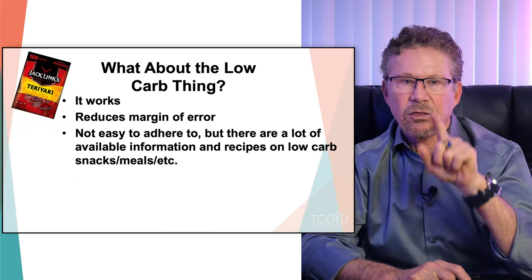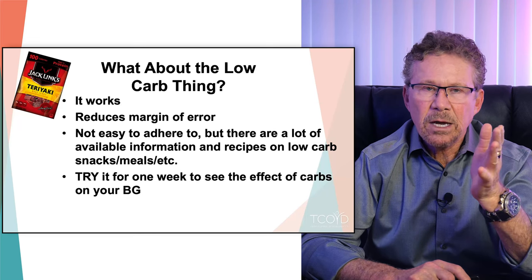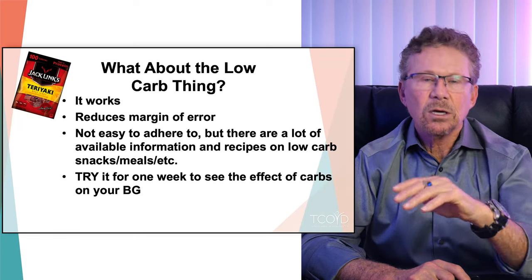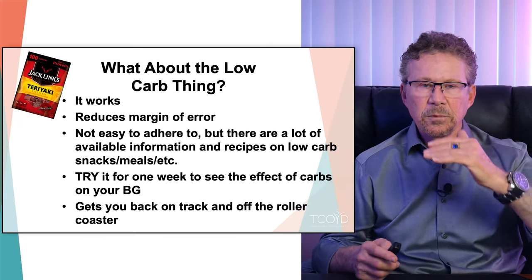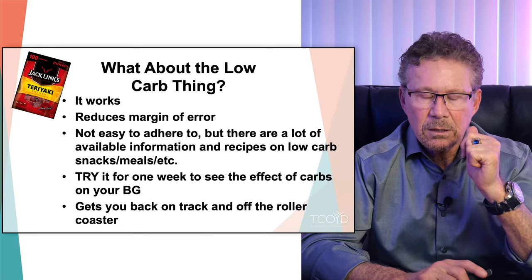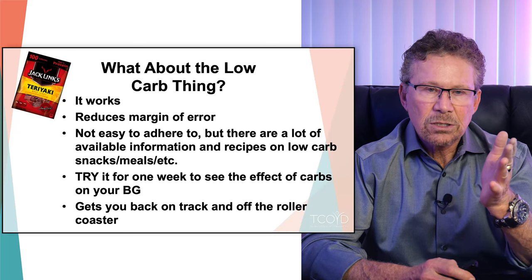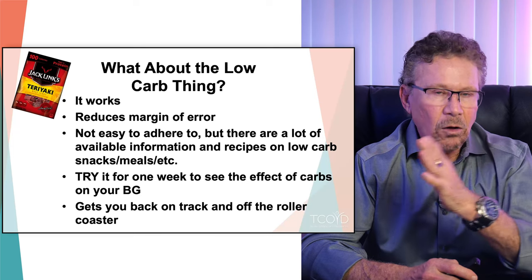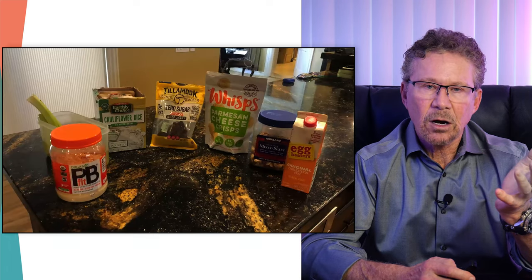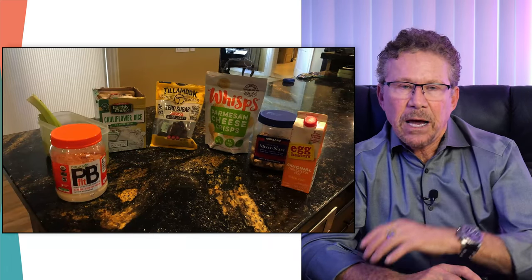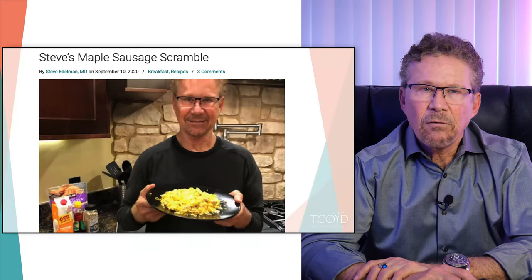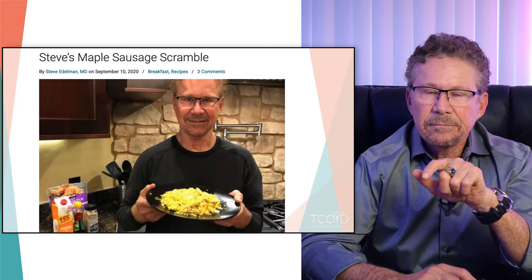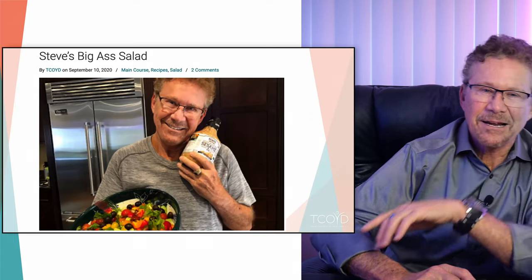Reduced carbs — not zero carbs — is a great way to go through life as a type 1. If your blood sugars are all over the place and you can't get your insulin dosing right, try it for a week. It can really help you get on track, and you might find a good regimen to follow long-term. It's especially useful if your control is terrible and you eat a lot of regular carbs. Some lower-carb foods to consider: powdered peanut butter, cauliflower rice, cheese crackers, beef jerky, egg beaters, nuts, Steve's maple sausage scramble, Taco Tuesday with lettuce instead of the taco shell, or a big salad — just be careful with the salad dressing, it's got a ton of calories.